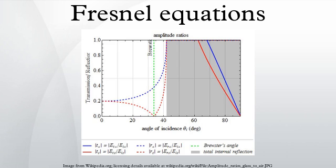When light moves from a medium of a given refractive index n1 into a second medium with refractive index n2, both reflection and refraction of the light may occur. The Fresnel equations describe what fraction of the light is reflected and what fraction is refracted. They also describe the phase shift of the reflected light. The equations assume the interface is flat, planar, and homogeneous, and that the light is a plane wave.